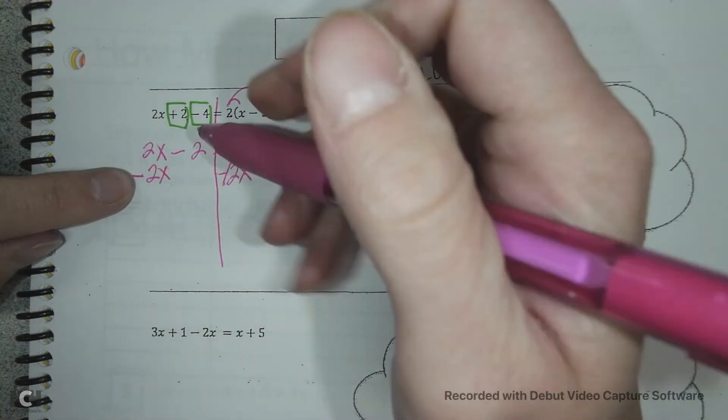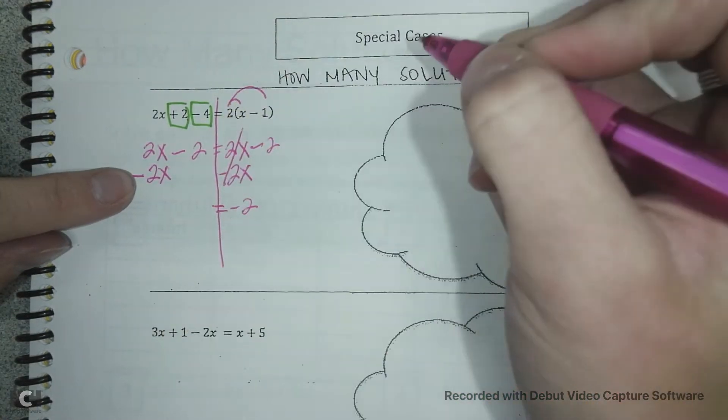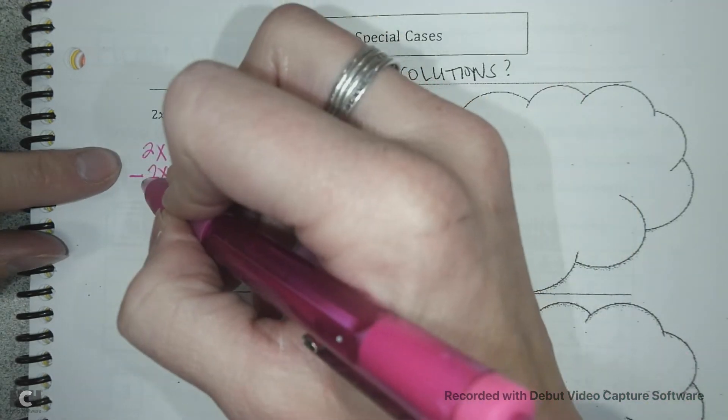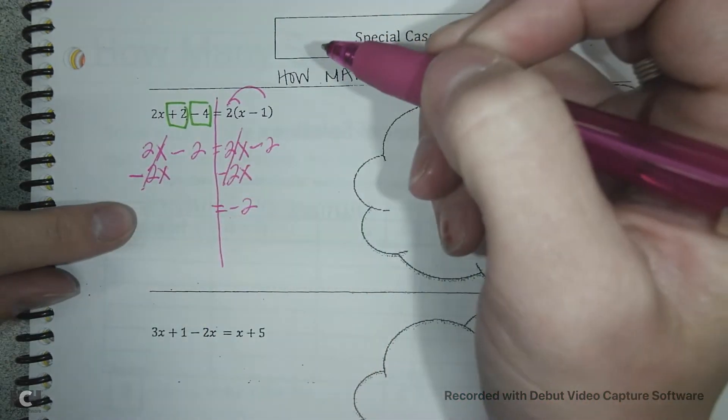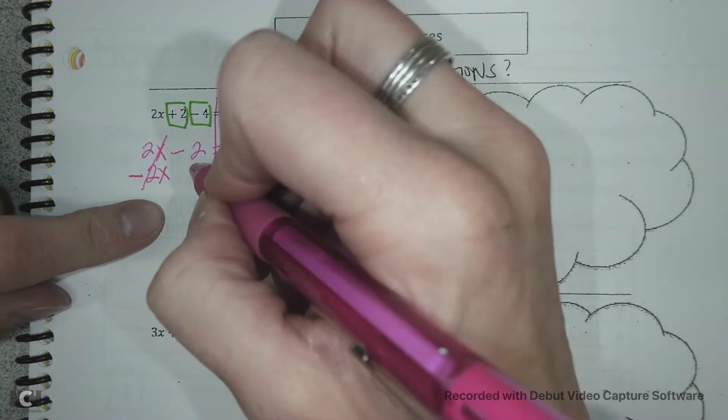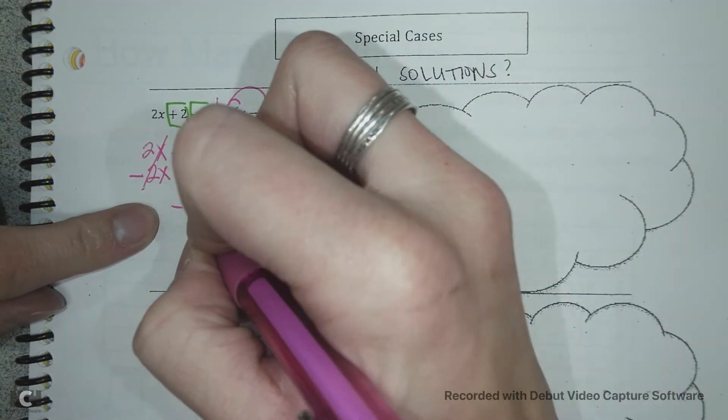So when I take my 2x away over here then I'm left with just my negative 2. On this side they actually go away as well. Notice I'm not going to write down 0x because that will be confusing to us. So I just bring down my negative 2.